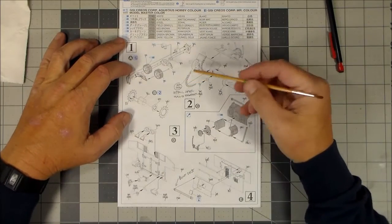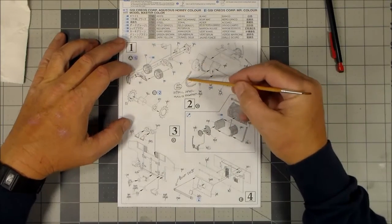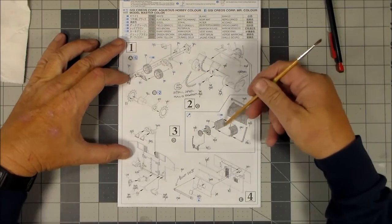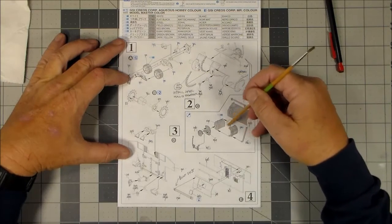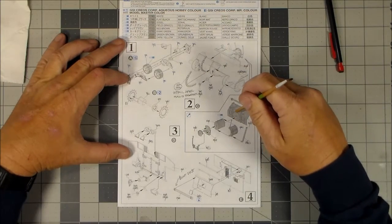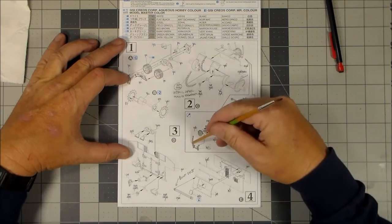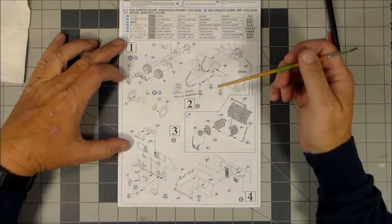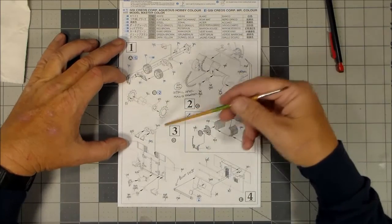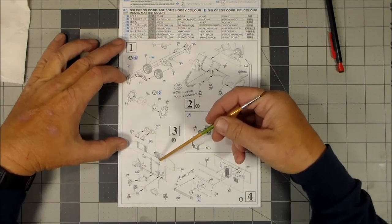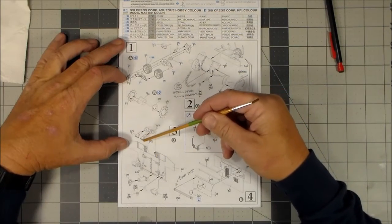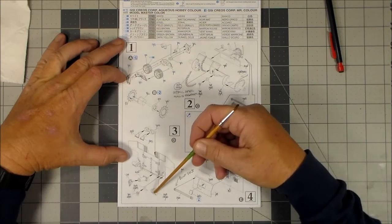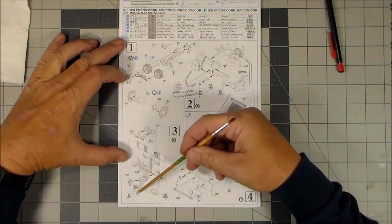I save those for later, so I made a notation: install after hull is together. Just leave those on the sprue or get them cleaned up and set them aside for now. Step two, the actual controls and the back of the transmission control levers, I just built straight according to the instructions.